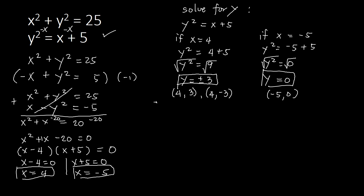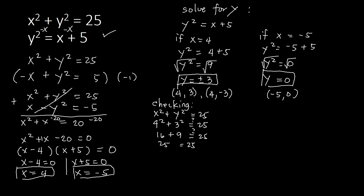Let's verify these points. Checking point (4, 3) in the first equation x squared plus y squared equal to 25: we have 4 squared plus 3 squared, which is 16 plus 9, equal to 25. So 25 equals 25 — correct.